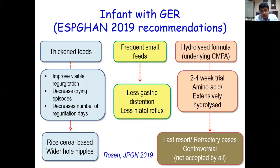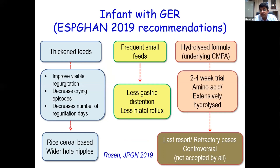In gastroesophageal reflux, the child is absolutely normal and just vomiting small quantities out. In the West, they thicken the feeds using rice cereal-based diet with wider nipples so the child can easily suck. This improves visible regurgitation, decreases crying episodes, and decreases the number of regurgitation days. You also give frequent and small feeds so there is less gastric distension and less hiatal reflux. A controversial last resort is using hydrolyzed formula, because GER may be a symptom of cow's milk protein allergy.